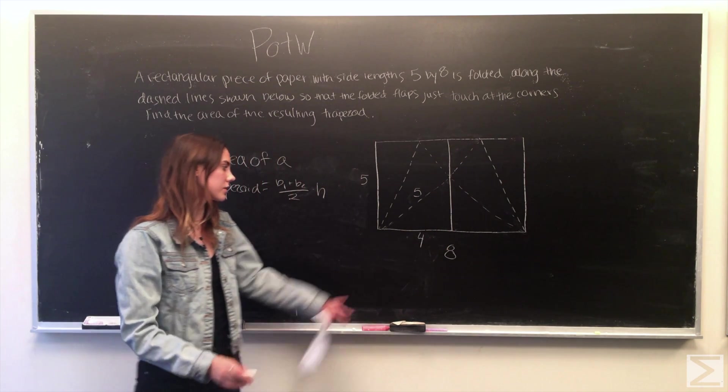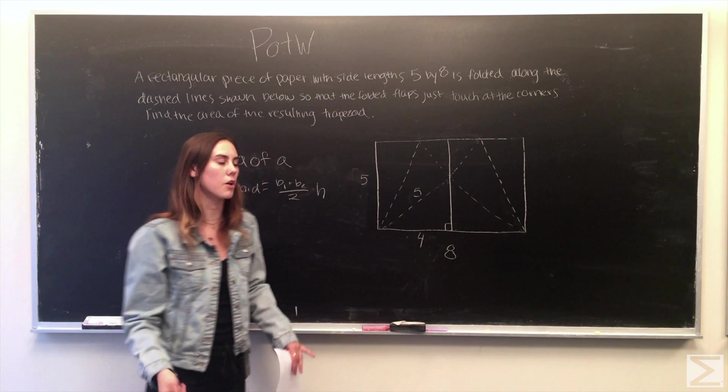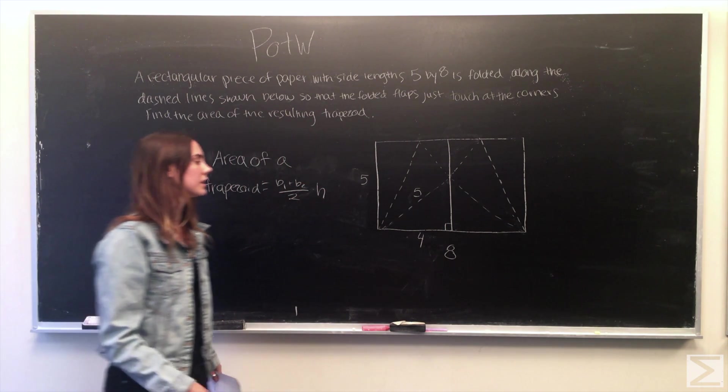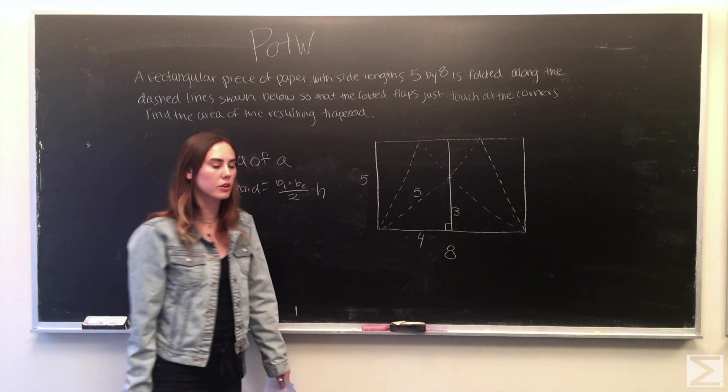Obviously there's a triangle right here and we know it's a 3, 4, 5 Pythagorean triple so we know that the height up to this point of that triangle is 3.